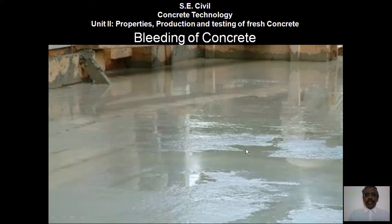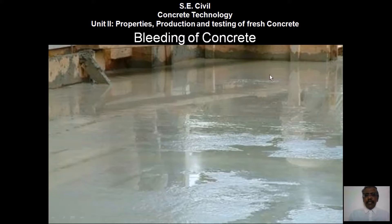Bleeding of concrete — there are small voids in the concrete. If compaction and vibration are not done properly, water will come out through these voids and appear on the top surface of the concrete. This water appearing on the surface is called bleeding of the concrete, and it is harmful to the concrete.